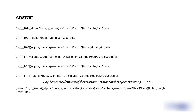So the matrix elements of the rotation operator for the representation J equal to 1 are: D^1_{M'M}(alpha, beta, gamma) equal to E^(-i(alpha+gamma)) cos^2(beta/2), (-1/sqrt(2)) E^(-i alpha) sin(beta), and the remaining elements as derived.